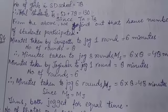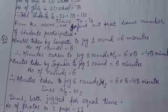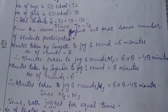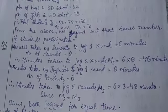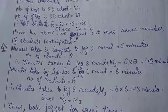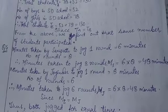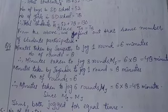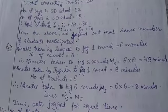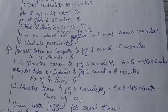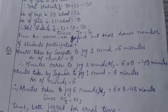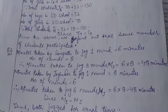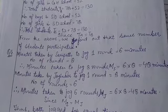Now see this question. Minutes taken by Sampat to jog one round: 6 minutes. Number of rounds: 8. Therefore, minutes taken to jog 8 rounds, that is MS, that is minutes subscript S for Sampat, how much will it be? If 1 round is 6 minutes and total rounds was 8, so how much will it be? 6 into 8, right? Because we multiply 1 to make more. 6 into 8 is 48 minutes.